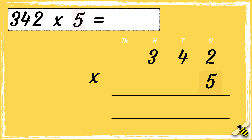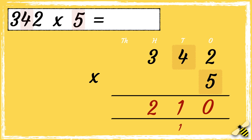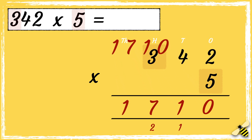First we multiply 5 by 2. 5 times 2 is 10. We carry the one below in the tens column as it represents 10. Then we multiply 5 by 4 tens. 4 times 5 is 20. We need to add the 1 below in the hundreds column as it represents 200. Finally we multiply 5 by 3 hundreds. 3 times 5 is 15. We need to add the 2 hundreds below, so 15 add 2 is 17. So the answer is 1710.